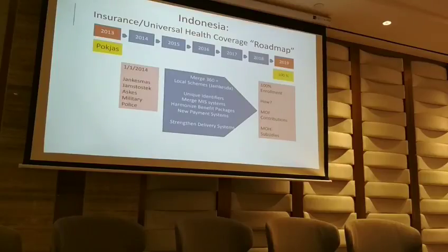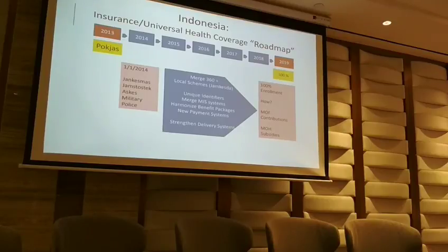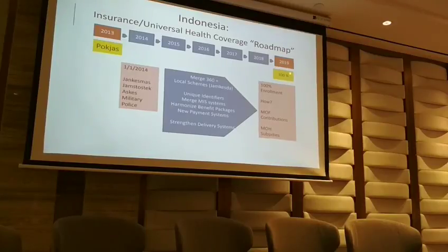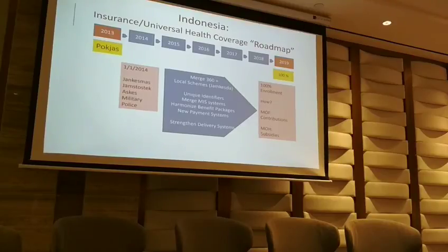After seeing these results, our government has developed a policy to integrate HIV into universal health coverage. This is the roadmap for universal health coverage — by 2019, the goal is to achieve 100% coverage, and it is currently at 70%. We want all key populations, including all people living with HIV, to also be served under UHC.